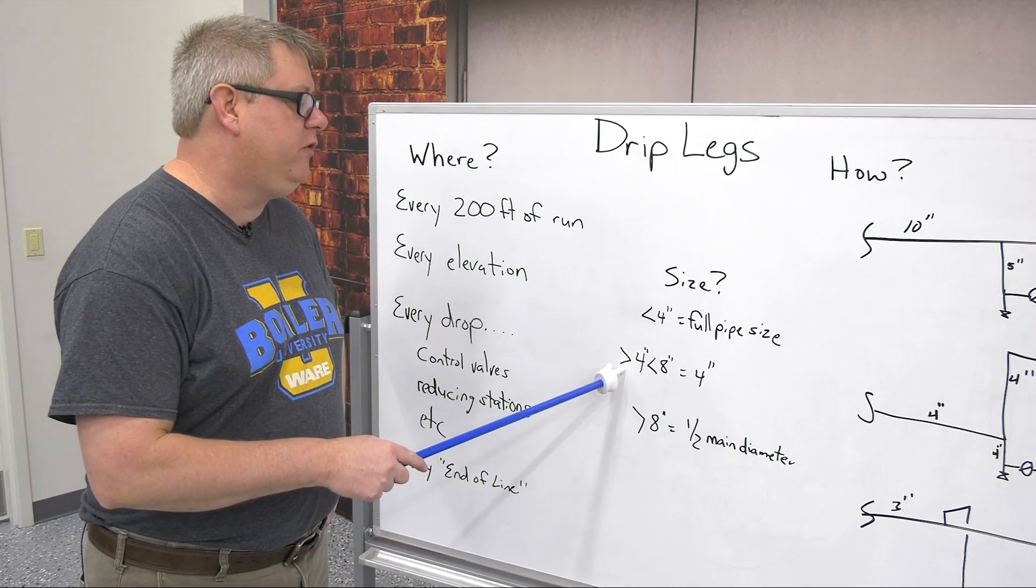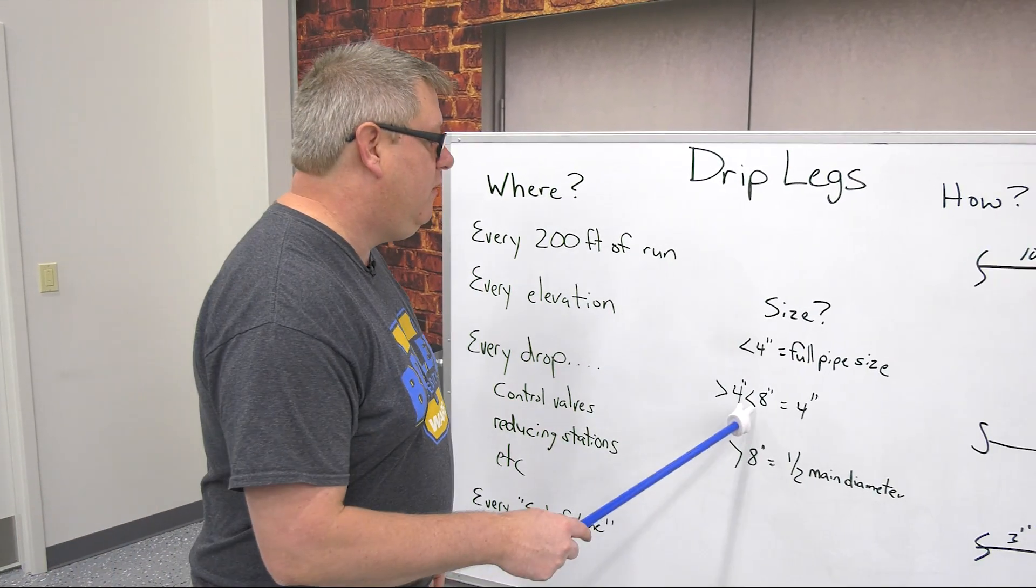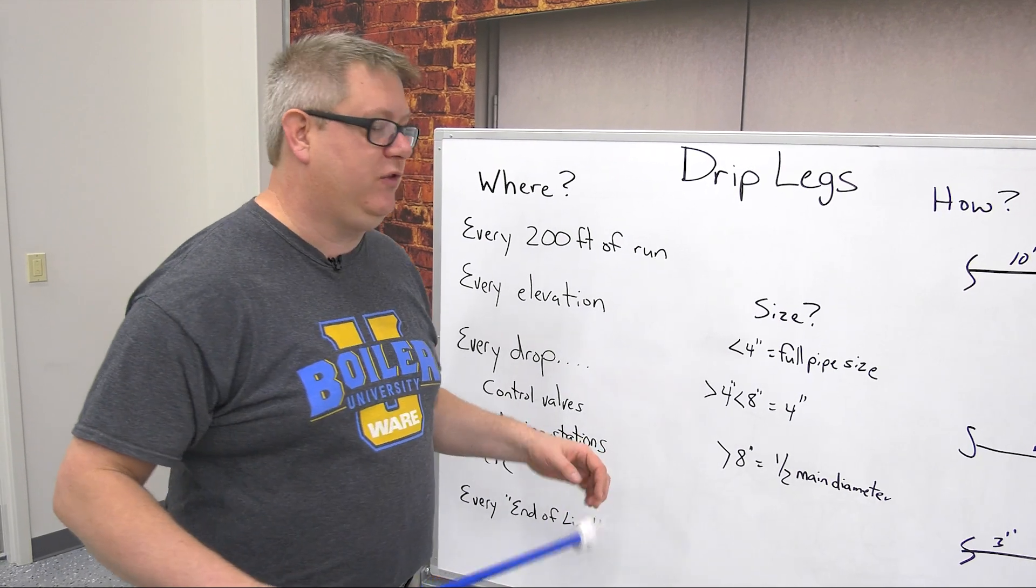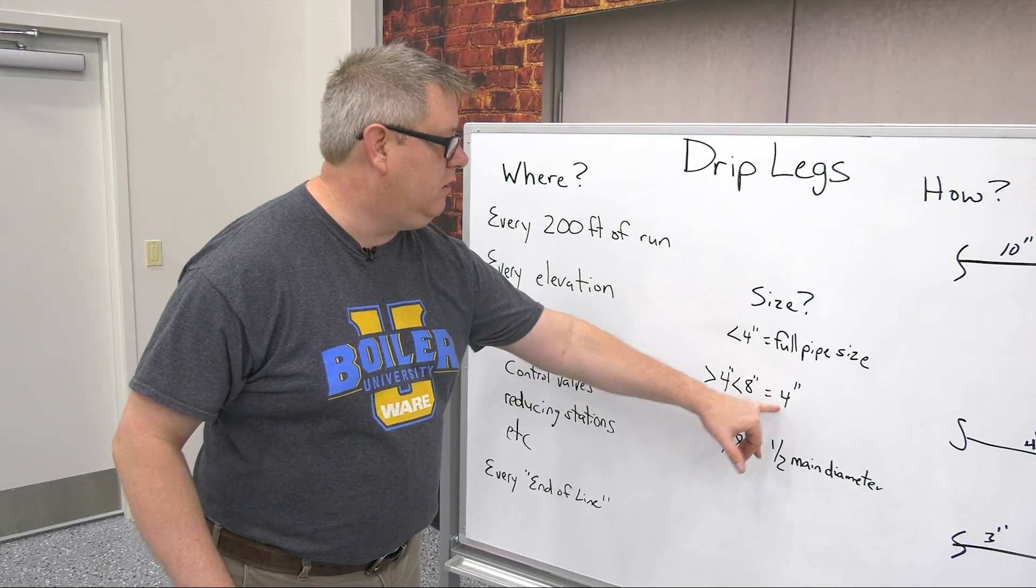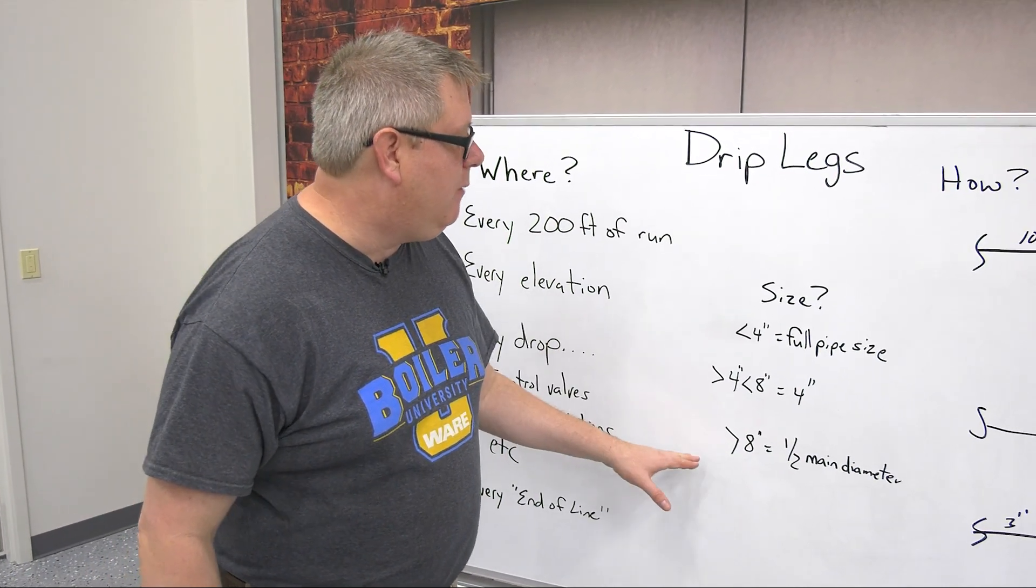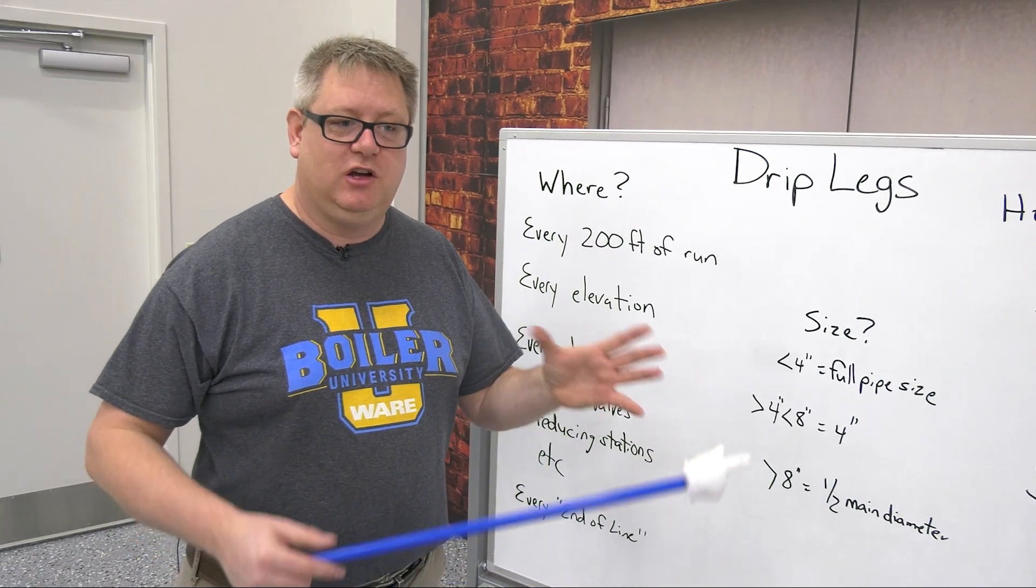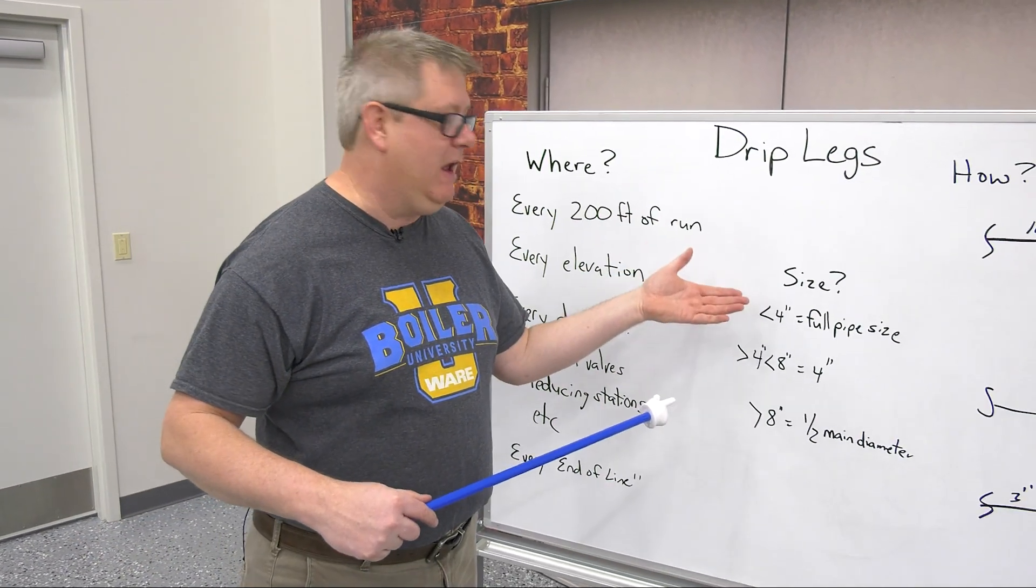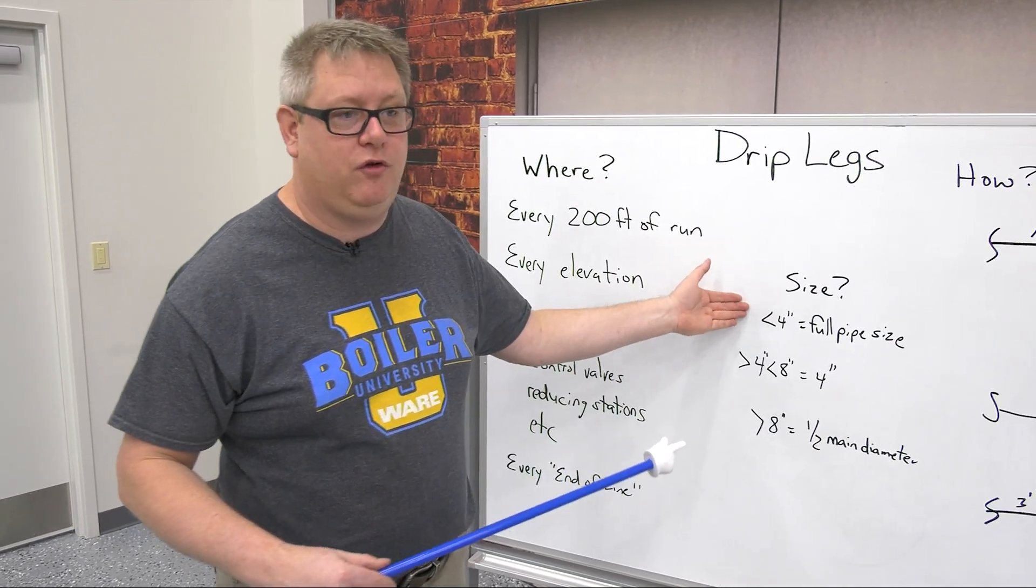If we're larger than a four inch main, we're going to use four inch for our drip leg up to eight inch pipe. So basically that's half until we get to eight inch. Above an eight inch main, we're going to use half inch of the main diameter. So if we have a 12 inch main, a six inch drip leg, an eight inch main, a four inch drip leg, a two inch main, a two inch drip leg.